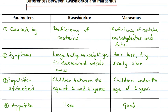Kwashiorkor and Marasmus are both deficiency diseases because they are caused by the deficiency of important nutrients. Kwashiorkor is caused by the deficiency of proteins, whereas Marasmus is caused by the deficiency of proteins, carbohydrates, as well as fats.